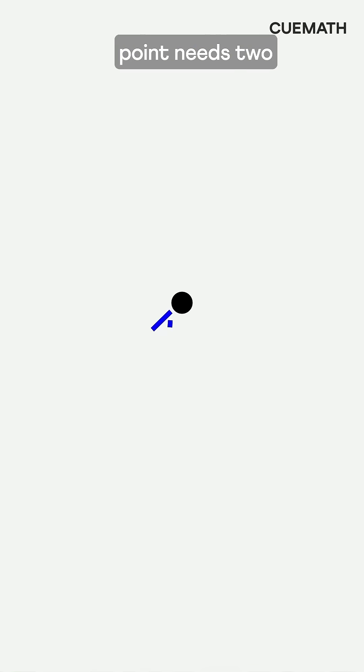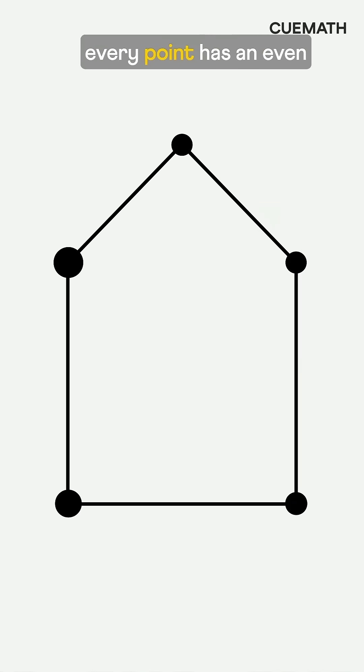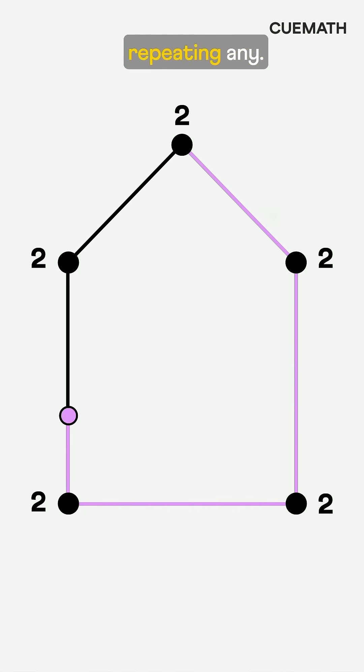Euler realized each point needs two lines, one to enter, one to leave, so each point must have an even number of connections. Like here, every point has an even number of lines, so we can cover all of them once without repeating any.